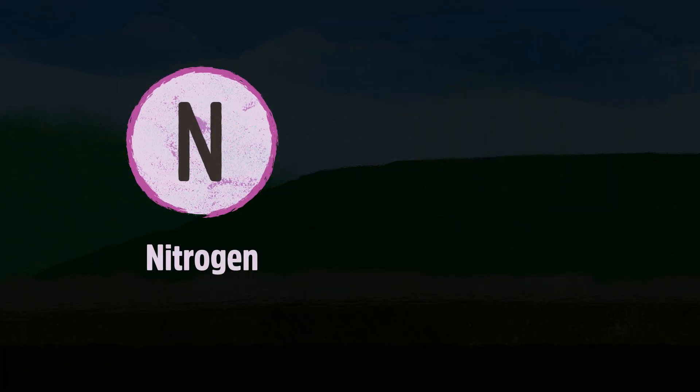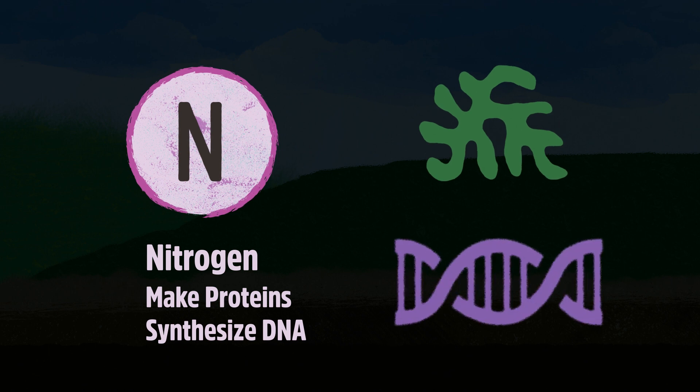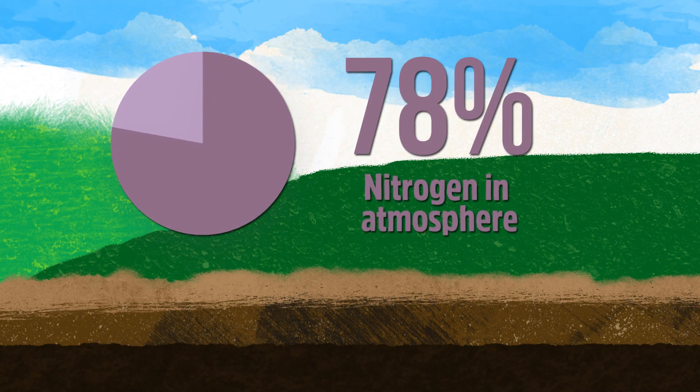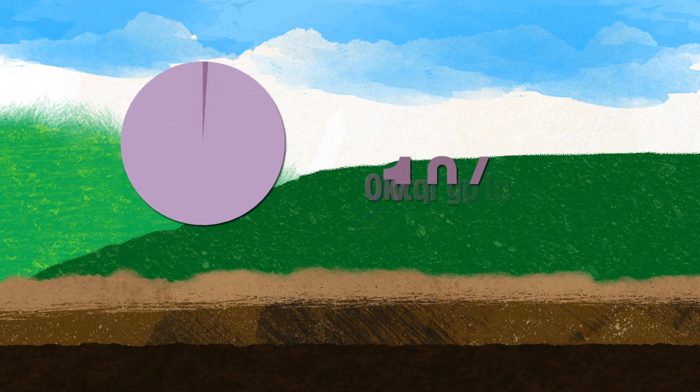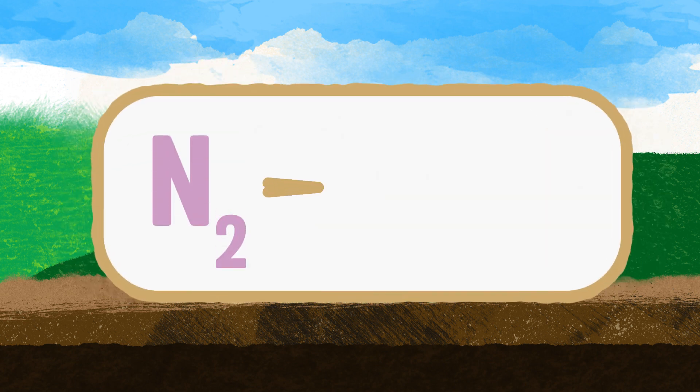Nitrogen is important to living things because it is needed to make proteins and synthesize DNA. Although 78% of the atmosphere is made up of nitrogen gas, most organisms cannot use nitrogen in this form. The nitrogen cycle converts atmospheric nitrogen into nitrates.